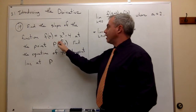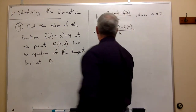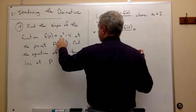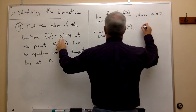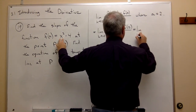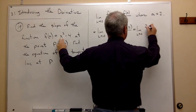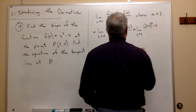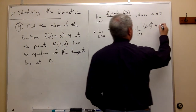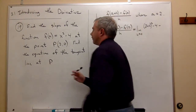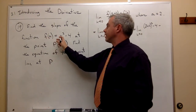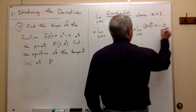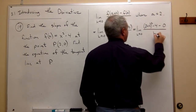f(2+h) means take 2+h and plug it in everywhere where I find an x. So f(2+h) — x is replaced by (2+h) — gives the limit as h goes to 0 of (2+h)² - 4, minus f(2). And what is f(2)? If I plug in 2 to the function, I get 2² = 4, minus 4, which is 0. So minus 0, divided by h.